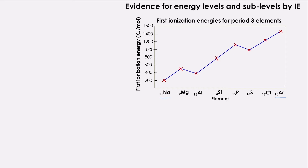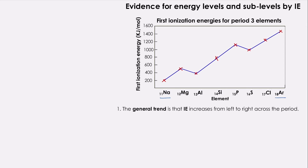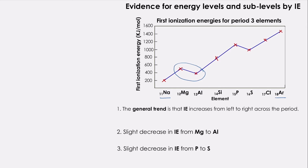We can see in this graph three things. The general trend, which is reflecting that the ionization energy is increasing from left to right across the period. There is a slight decrease in the ionization energy from Mg to Al, and another slight decrease in ionization energy from P to S.